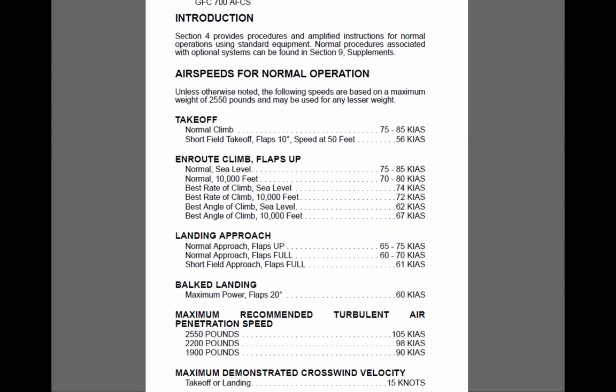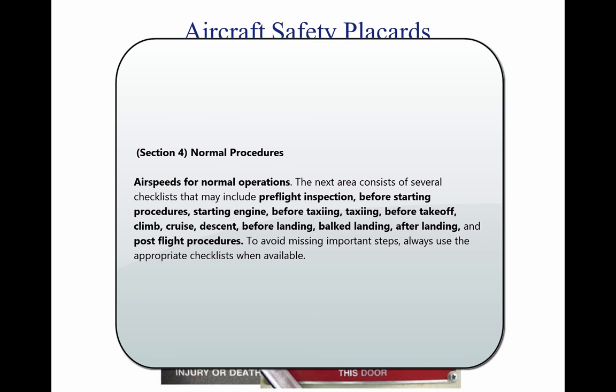Section 4: This section begins with a list of the airspeeds for normal operations. The next area consists of several checklists that may include pre-flight inspection, before starting procedures, starting engine, before taxiing, taxiing, before takeoff, climb, cruise, descent, before landing, bulk landing, after landing, and post-flight procedures. To avoid missing important steps, always use the appropriate checklists when available. Consistent adherence to approved checklists is a sign of a disciplined and competent pilot.